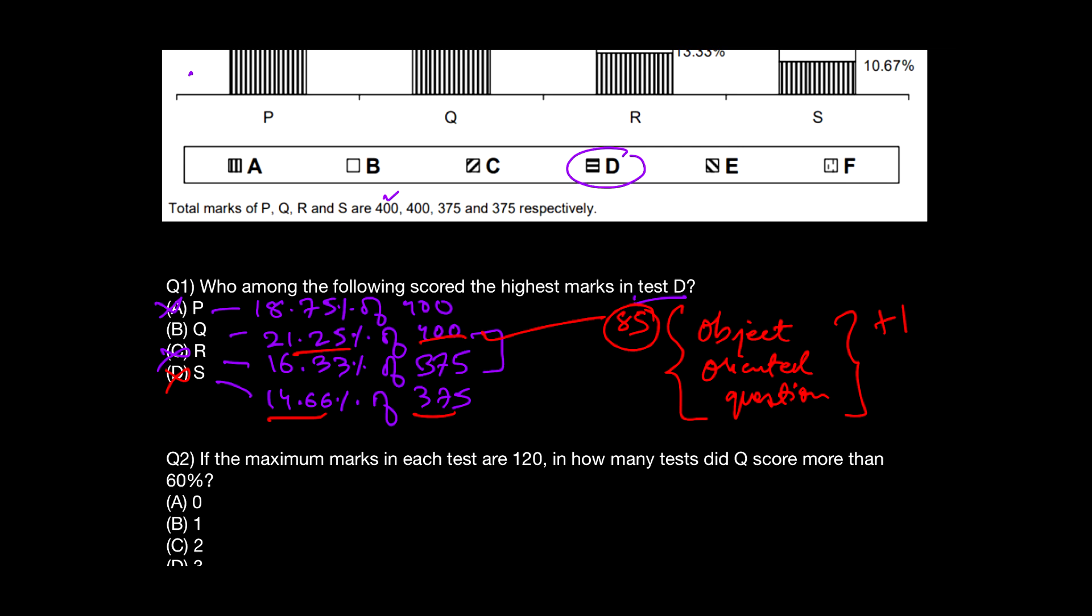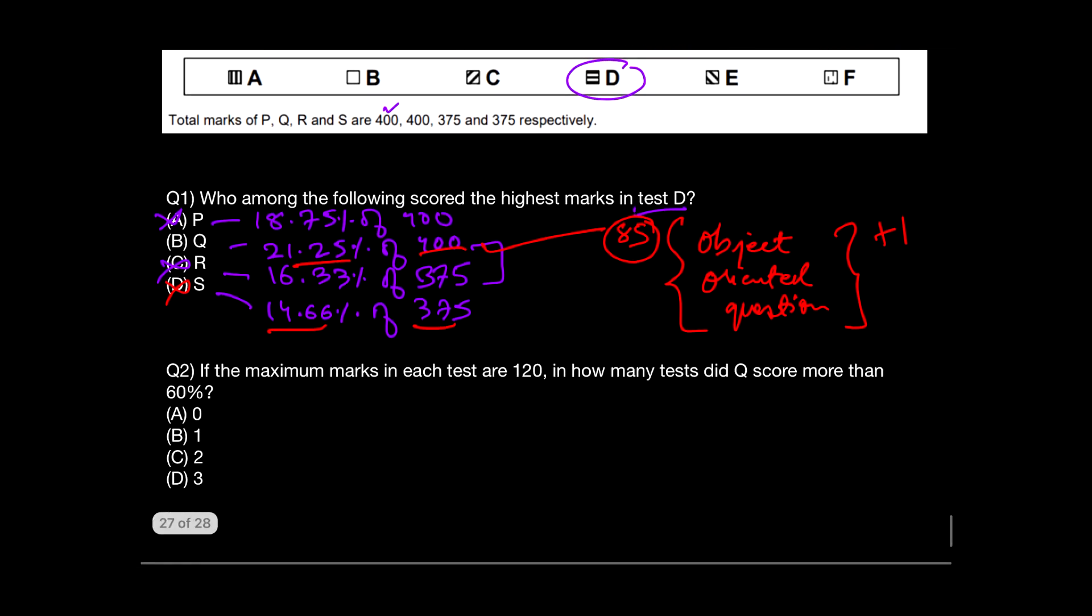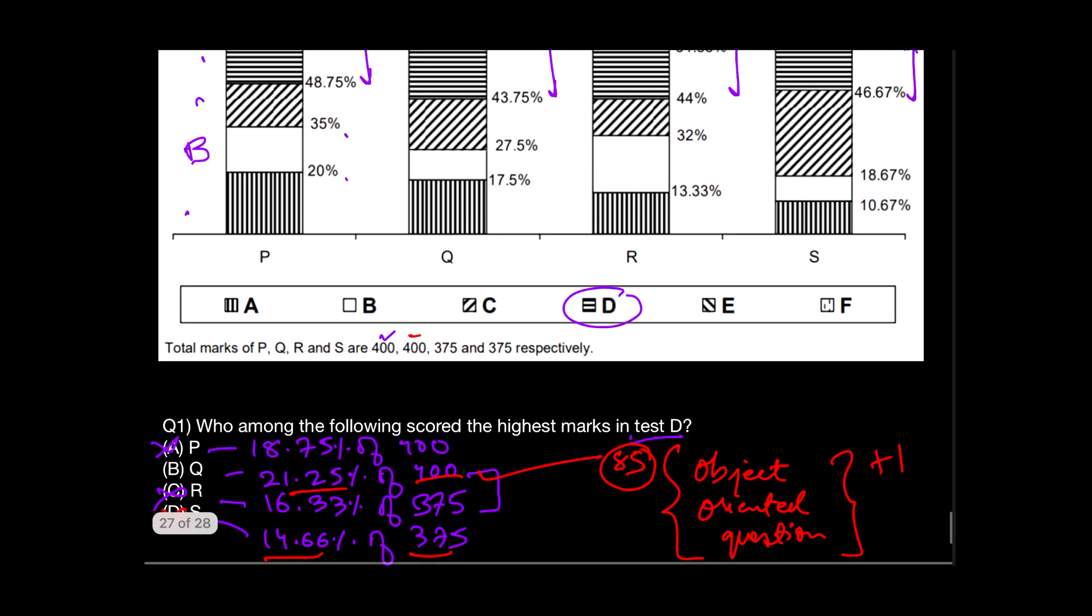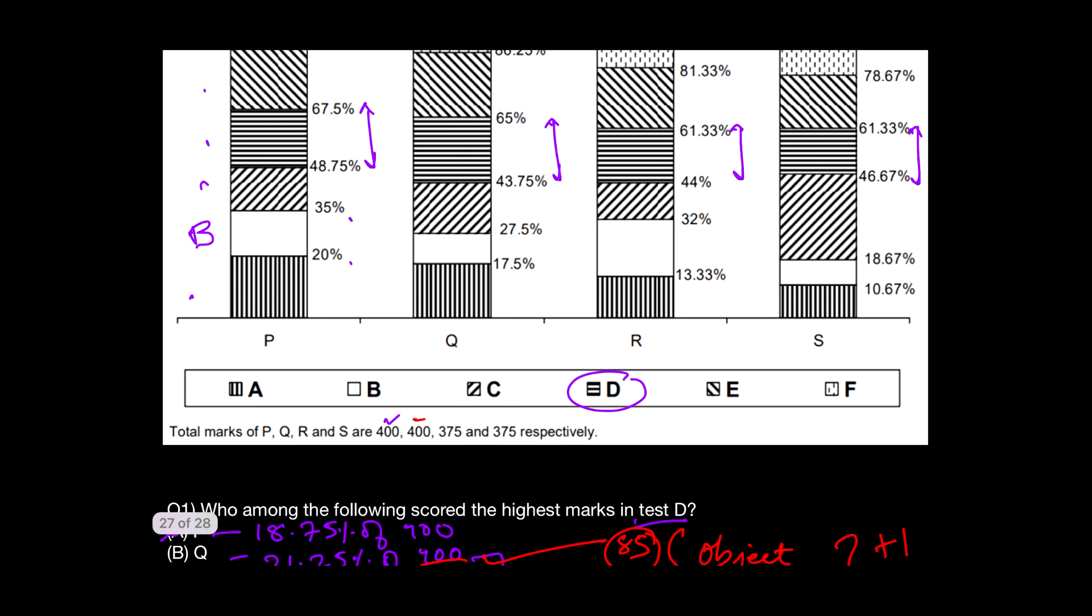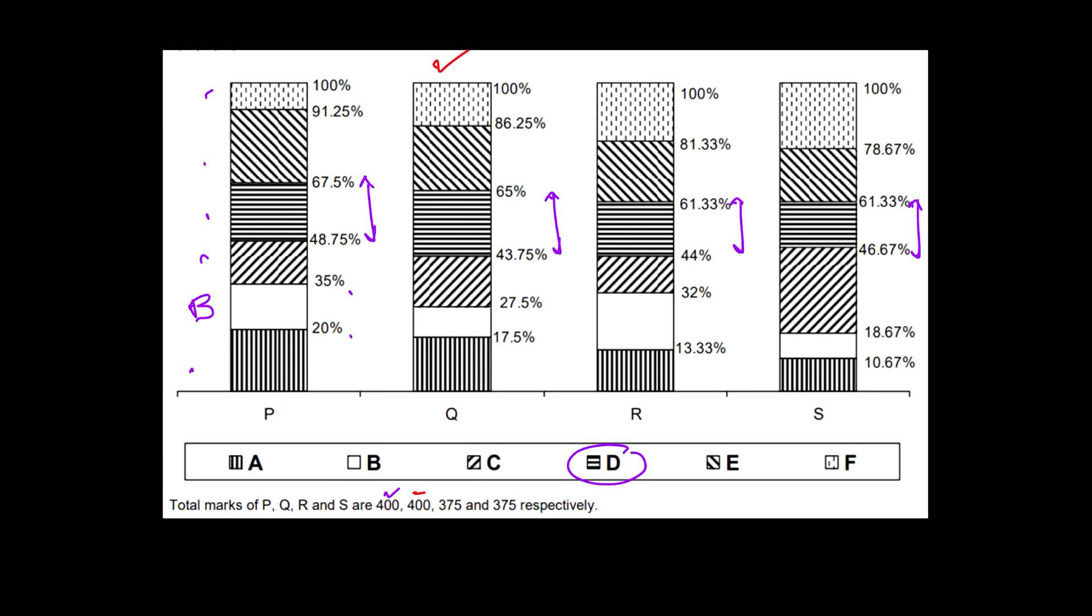Coming to the second question now: 'If the maximum marks in each test is 120, in how many tests did Q score more than 60%?' For solving this question, you will first find out the 60% of 120, which is 72. Now you have to make a comparison on the various tests where the marks of Q is more than 72. For Q, the total marks is 400, so remember that. Then we have to go across all the tests. This is the stacked bar chart of Q, and I'll be considering 72 marks for my comparison. 72 marks for 120 is equivalent to 60%, and I need more than 60%.